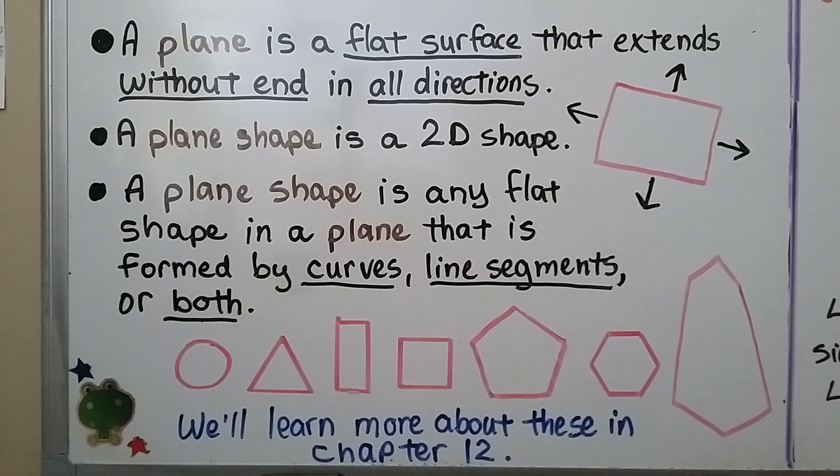A plane shape is a 2D shape, a two-dimensional shape. It has length and width. And a plane shape is any flat shape in a plane that is formed by curves or line segments or both. So any one of these would be a two-dimensional shape, a plane shape. And we'll learn more about these in chapter 12.